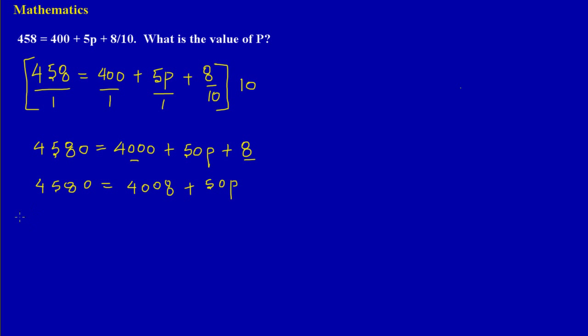Since 4008 was being added to 50p, I need to do the opposite of addition, which is to subtract 4008 from both sides. Because remember, it's an equation we're working with, so what is done to one side of the equation must be done to the other side of the equation. So here I have subtracted 4008, and that is equal to 4008. Since I had subtracted it from that side, I must do it also to this side, so I'm subtracting 4008 plus 50p.